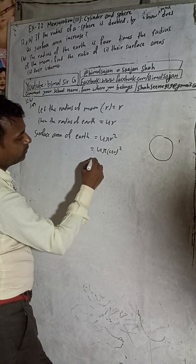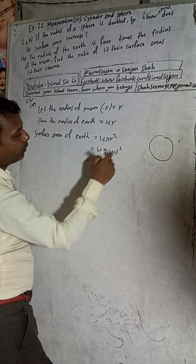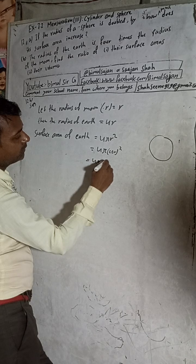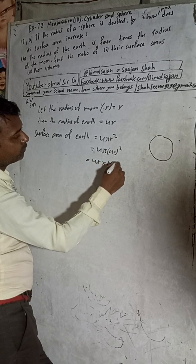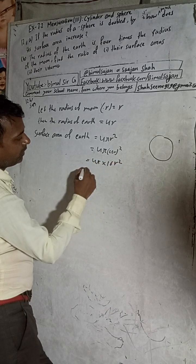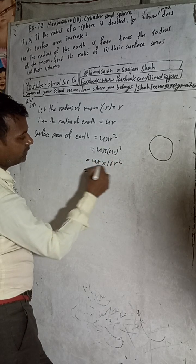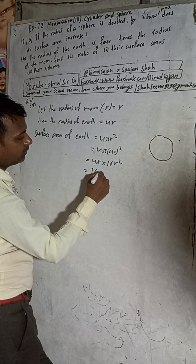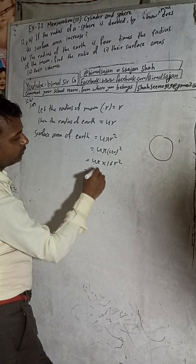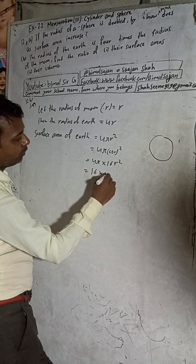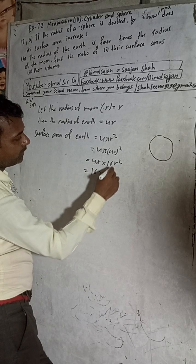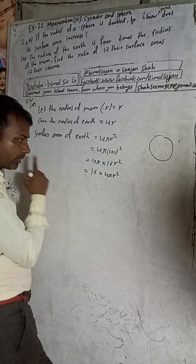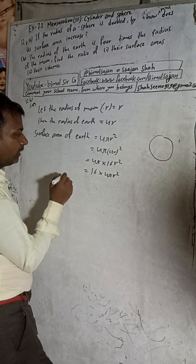That means this can be written as 16 into 4πr². So the surface area of the Earth equals 16 × 4πr².